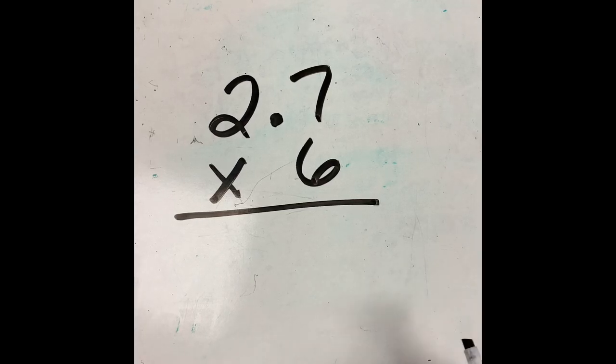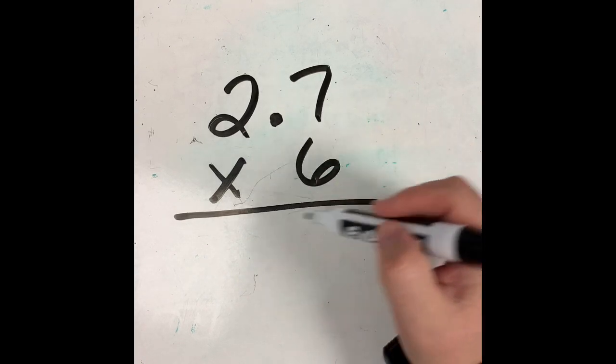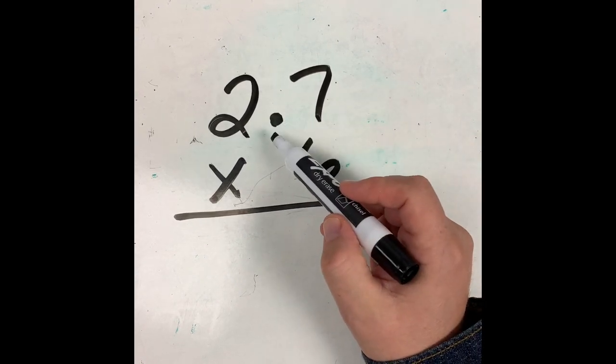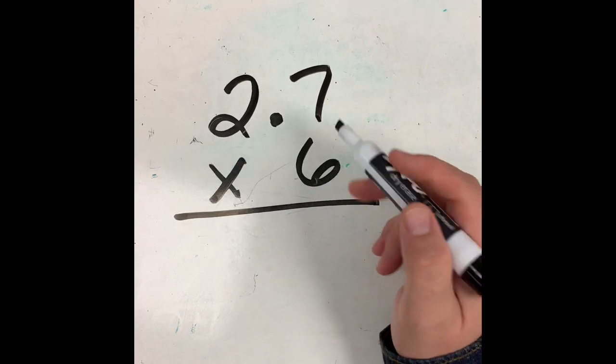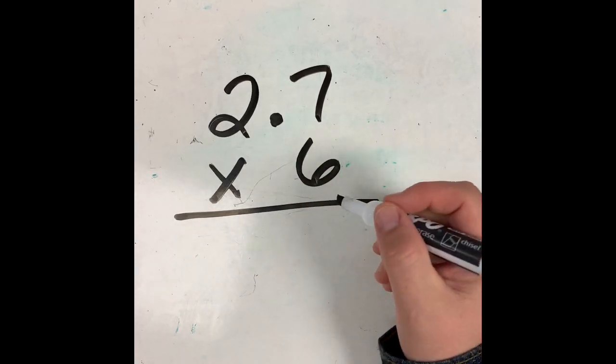Alright, so I've got the number 2.7 times 6. Now remember, when I'm looking at something like this, I'm going to take this decimal and pretend like it doesn't even exist while I'm working on the problem. So we're just going to pretend like it's not there, and we'll deal with it at the end.